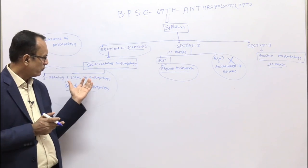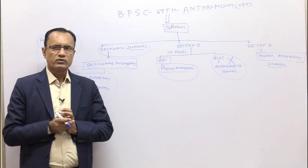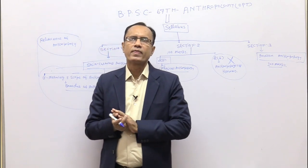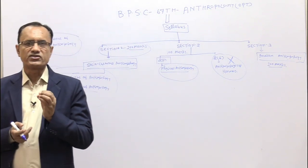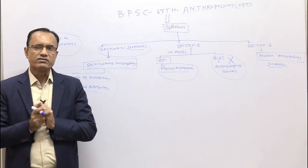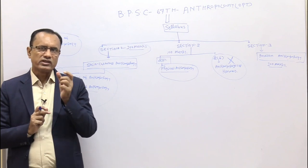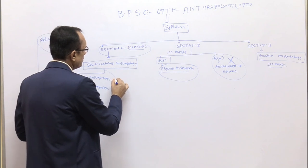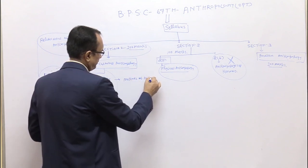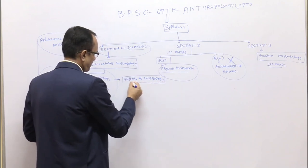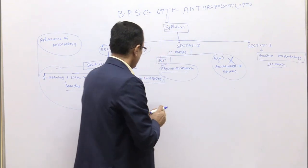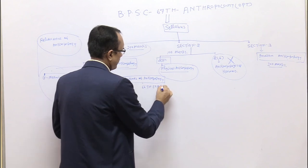We should not only study the scope of Anthropology but also the scope of Socio-cultural Anthropology, Physical Anthropology, Archaeological Anthropology, Linguistic Anthropology, and Applied Anthropology. Some important topics are not directly mentioned in our syllabus, but BPSC has asked questions on them — for example, methods of Anthropology. This is not directly in the syllabus, but BPSC has asked questions on it, including recently in the 66th exam.